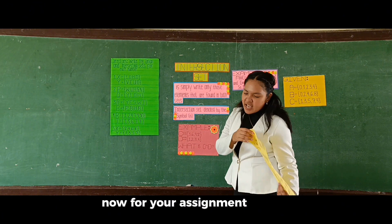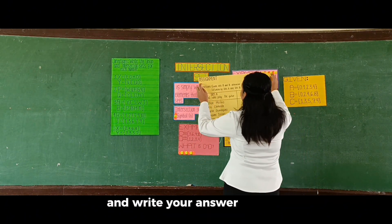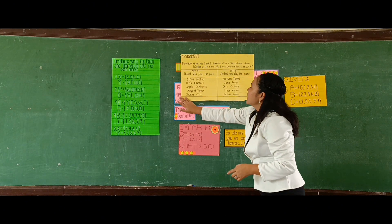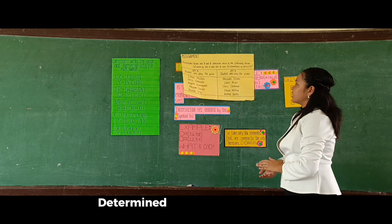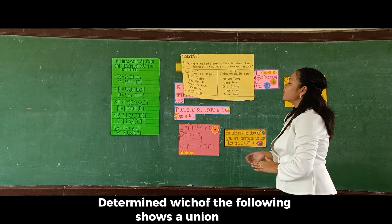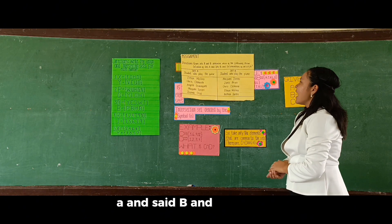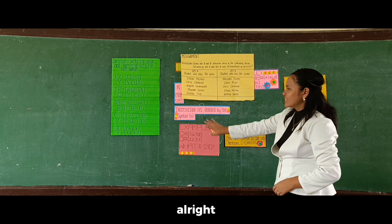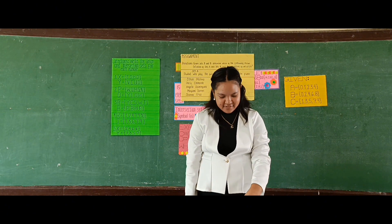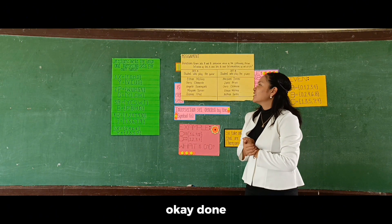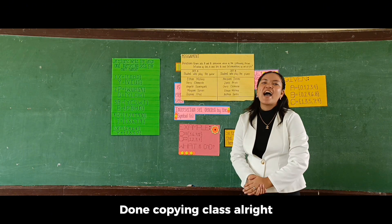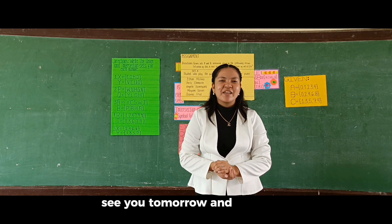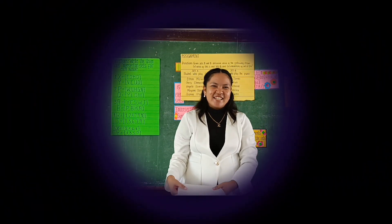For your assignment, I want you to copy this and write your answer in your assignment notebook. Directions: given sets A and B, determine which of the following shows A — union of set A and set B, and B — intersection of set A and set B. Alright! Done! That is all for today's discussion. See you tomorrow and may God bless us all. Goodbye!